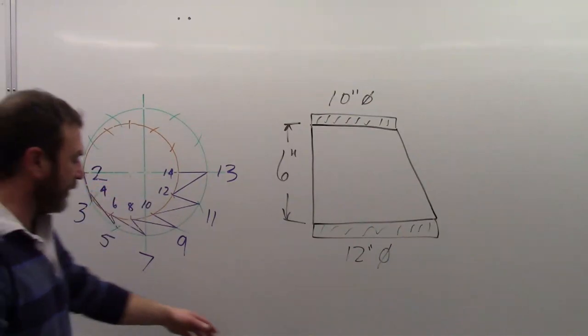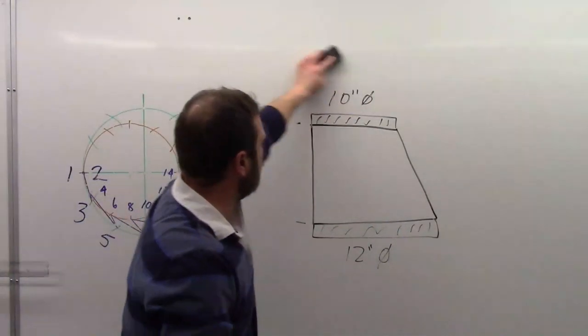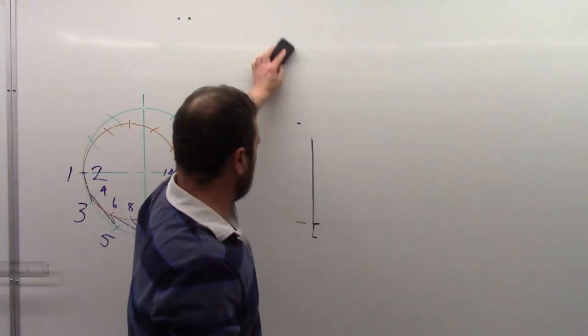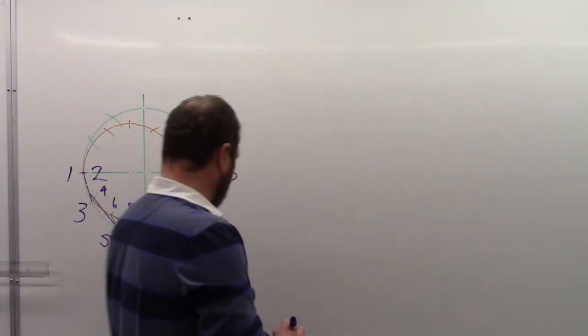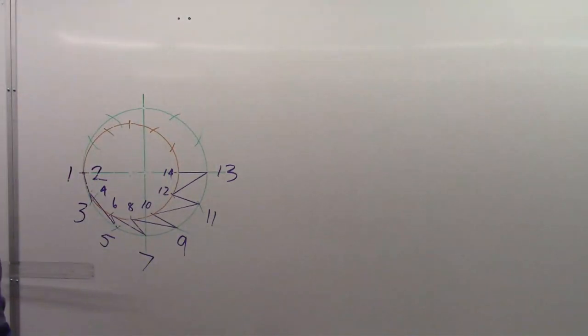Okay, so now, again, we're going to, I'll just scrub this one out. We know we've got a 6 inch vertical height, but we're going to go in and create our true length diagram now.